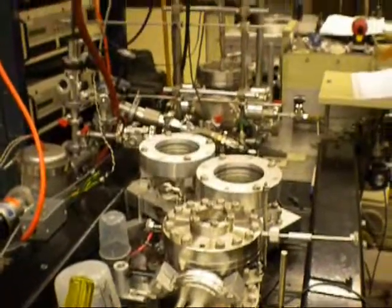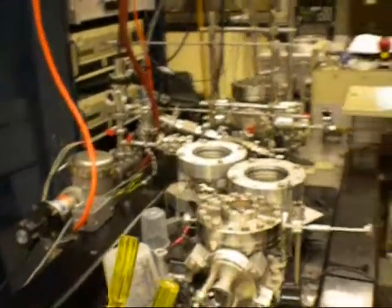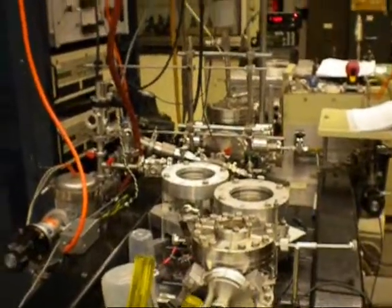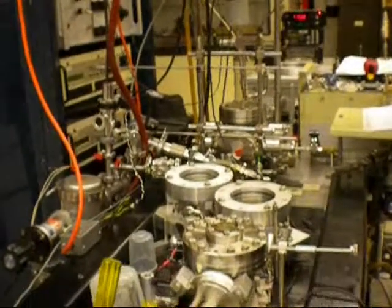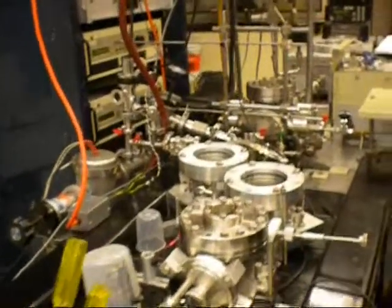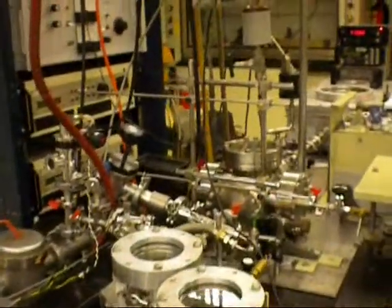Clearly, if we go to a chromium forsterite laser, we'd have to change the nature of the detector. So we'd have to get an infrared-sensitive diode array or something like that in comparison to the photodiode array that we currently have.